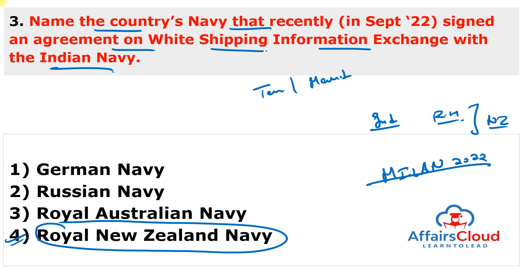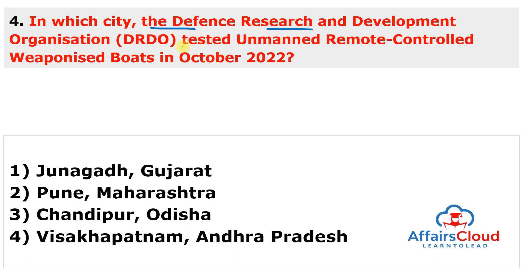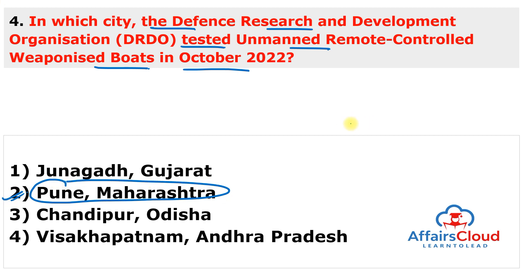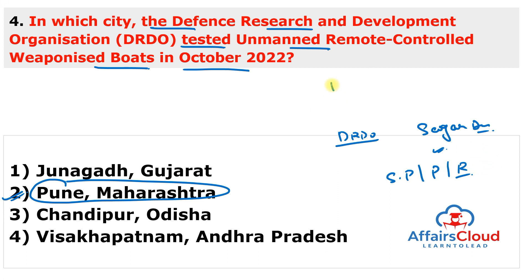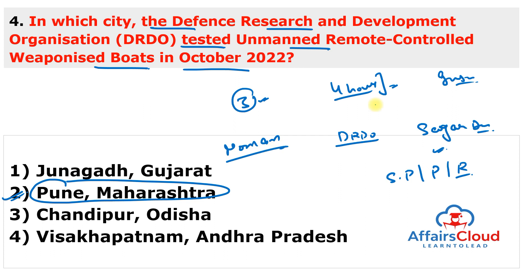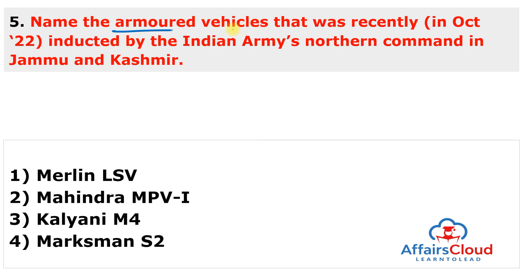In which city did the Defense Research and Development Organisation test unmanned remote-controlled weaponized boats in October 2022? The answer is Pune, Maharashtra. These boats were developed by DRDO in collaboration with Sagar Defense Engineering, a defense production startup. The boats are used for surveillance, patrolling, and reconnaissance for overall maritime security, with an endurance of about four hours. They are also mounted with a weapon system for use in case of any insurgency.